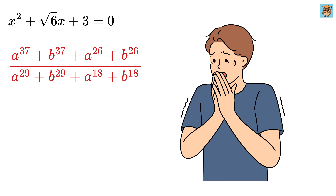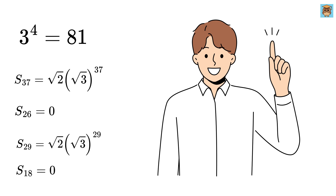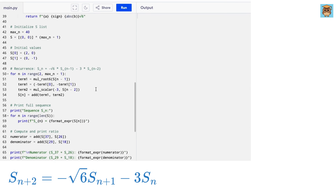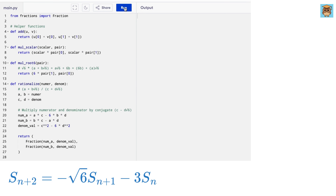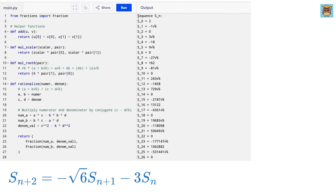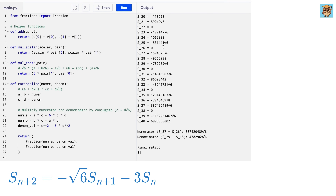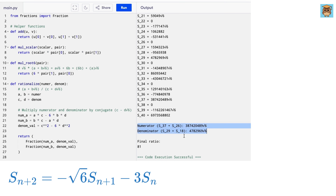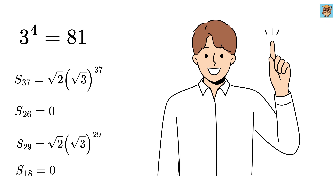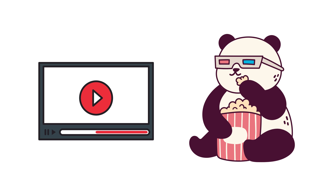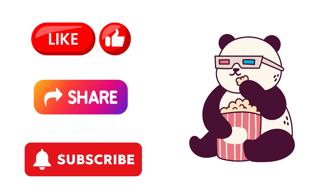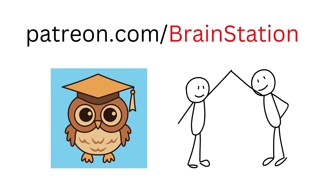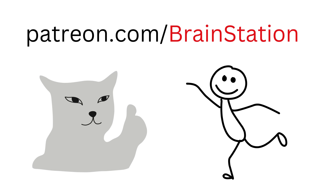And that's it. What started off looking like a nightmare ended up being a clean, smart, and elegant solution. By the way, I have written a code to give us the value of s_n starting from n equals 1 to n equals 40 using recurrence relation, and then I computed the numerator and denominator to get the final ratio as 81, which is exactly the same as our value. If you enjoyed this video, please don't forget to like, share, and subscribe to our channel. You can also support my channel by joining our community and becoming a member.